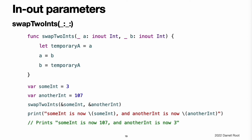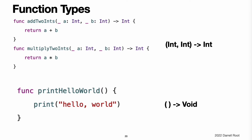Note: in-out parameters are not the same as returning a value from a function. The swap2Int example does not define a return type or return a value, but it still modifies the values of someInt and anotherInt. In-out parameters are an alternative way for a function to have an effect outside of the scope of its function body. Function types. Every function has a specific function type made up of the parameter types and the return type of the function. This example defines two simple mathematical functions called add2Int and multiply2Int, which each take two Int values and return an Int value. The type of both functions is (Int, Int) -> Int. Here is another example for a function with no parameters or return value, whose type is () -> Void.